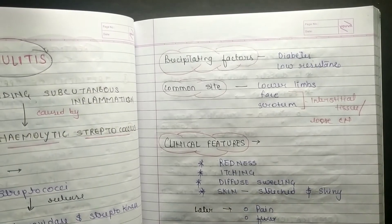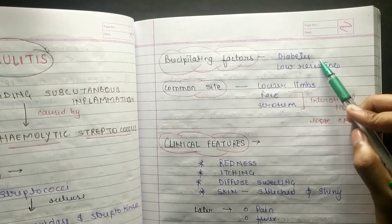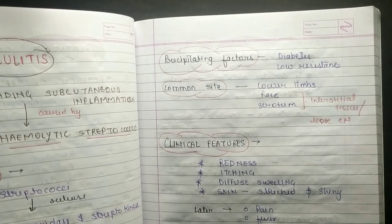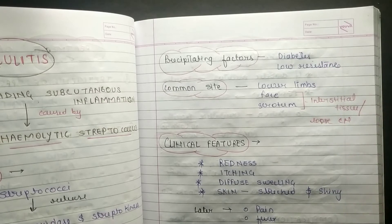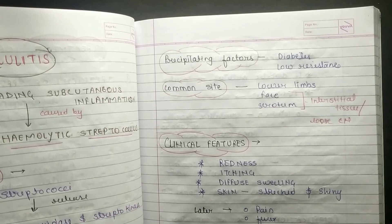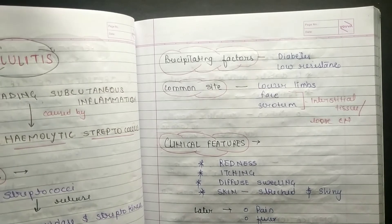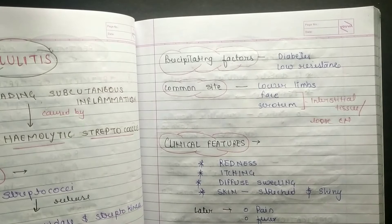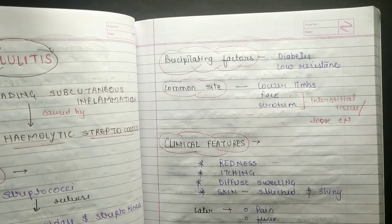What are the precipitating factors? Diabetes - if a patient has diabetes they may develop cellulitis. Also low resistance people, meaning people who have low immunity will get cellulitis. People who don't have good immunity might get cellulitis.